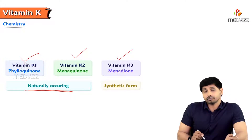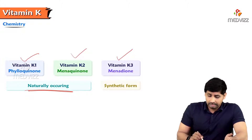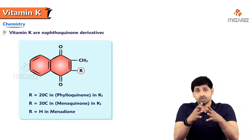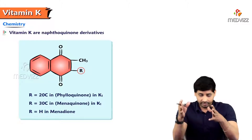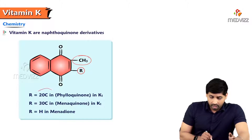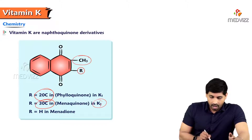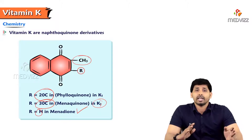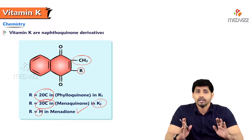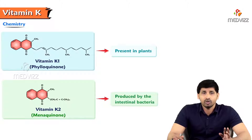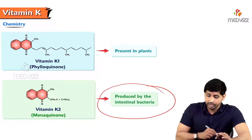For commercial use in the lab, we can synthesize vitamin K, that is vitamin K3, menadione, which is the synthetic form. All vitamin K types - K1, K2, K3 - are naphthoquinone derivatives; they have rings with a benzene ring attached with a methyl group. The R group varies: in K1 it is a 20-carbon chain, in K2 it is a 30-carbon chain, and R is H in case of menadione. Vitamin K1 is present in plants and K2 menaquinone is present in intestinal bacteria.